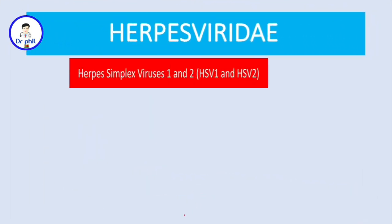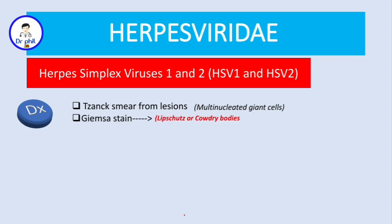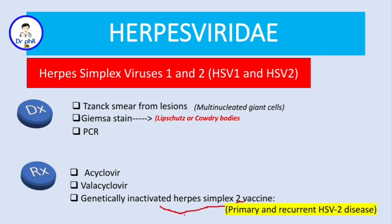Let's conclude this video by talking about diagnosis and treatment. On diagnosis, we can prepare Tzanck smears from the lesions, in which we will see multinucleated giant cells. Another method is Giemsa stain, and we can detect the Cowdry bodies. To detect viral DNA, we can use polymerase chain reaction. For treatment, we can use acyclovir, valacyclovir, and also we have a genetically inactivated herpes simplex 2 vaccine, which is used to prevent primary and recurrent HSV-2 disease.